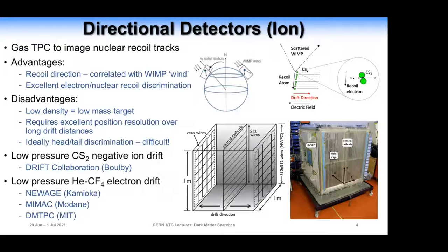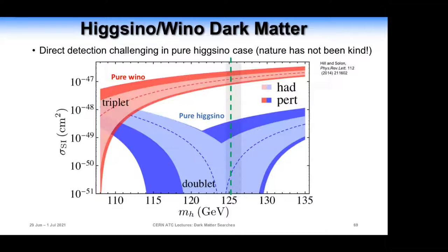We touched briefly yesterday on directional detectors, which typically use a gas volume with a wire chamber readout. The key challenge is getting very precise measurement of very short, low-energy tracks, which is difficult over large drift volumes because of diffusion. One innovative way is to attach drifting charge electrons to an electronegative gas like CS2 and drift that through the volume — the larger mass of the CS2 minus ion means there's less diffusion. Crucial for directionality is head-tail discrimination, so you can tell the difference between a nuclear recoil going in one direction versus the other.